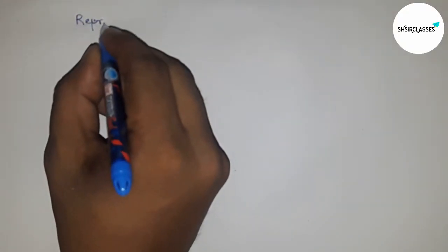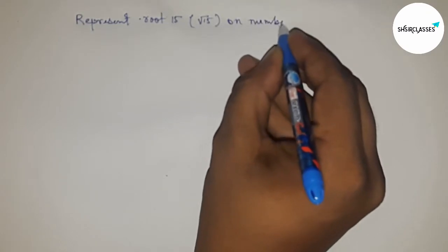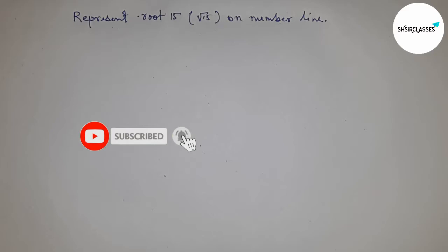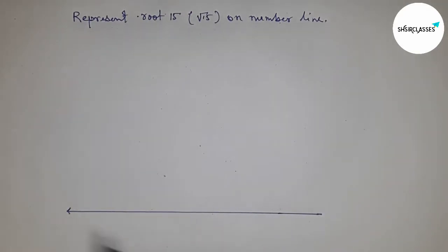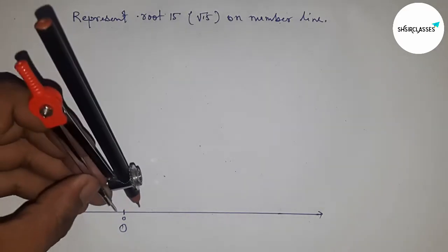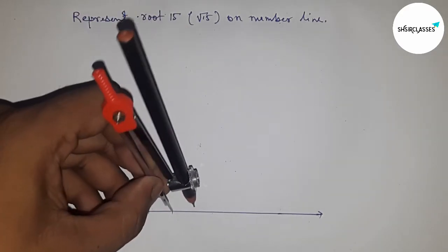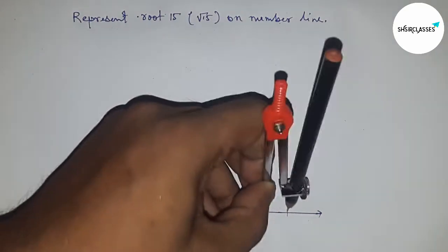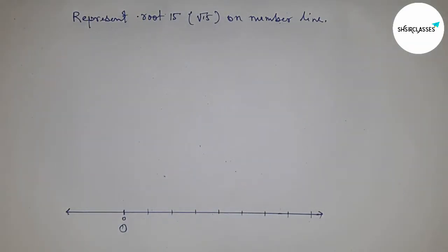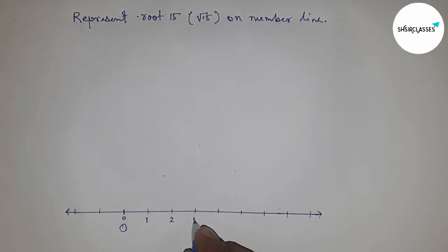Hi everyone, welcome to a sister classes. Today we are talking about the representation of root 15 on a number line. Before starting the video, please subscribe to the channel and press the bell icon for future video notifications. First, drawing a line of any length to represent the number line. The starting number is zero, denoted by O. Taking any length by compass and marking the numbers on the line — all lengths are equal, one unit length each.